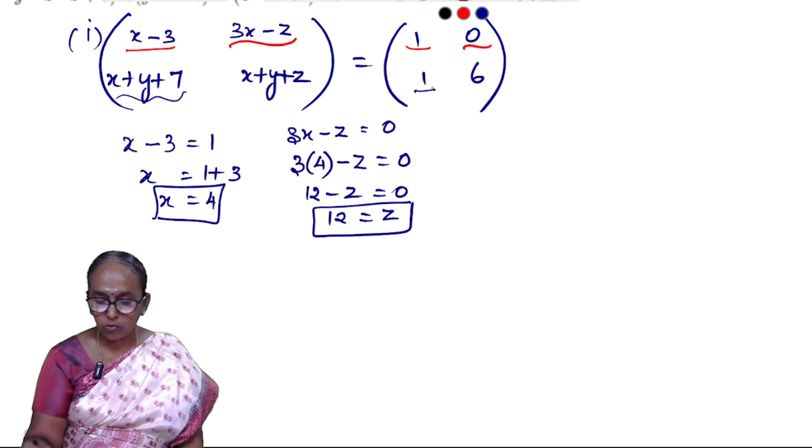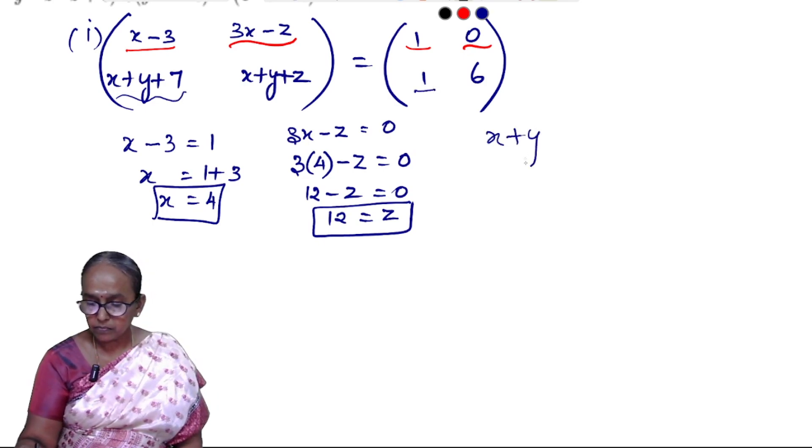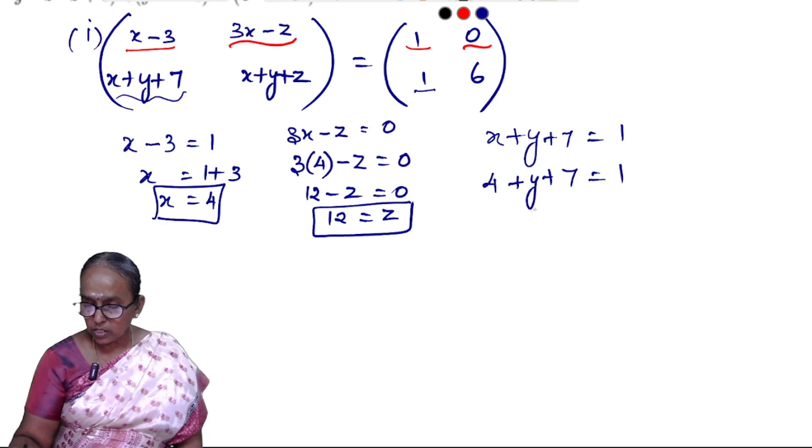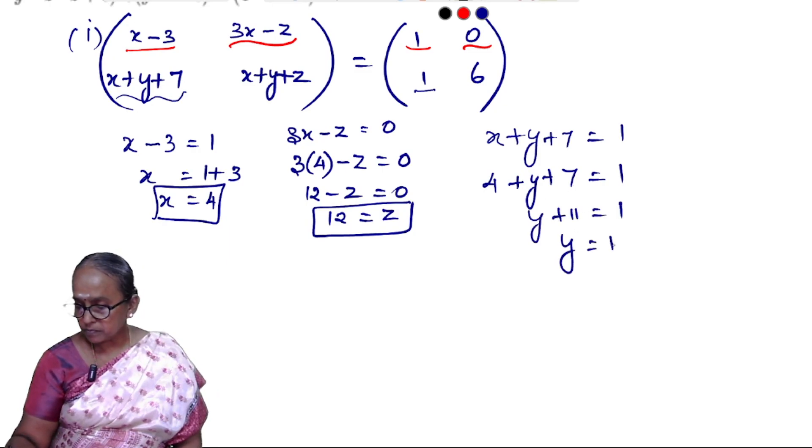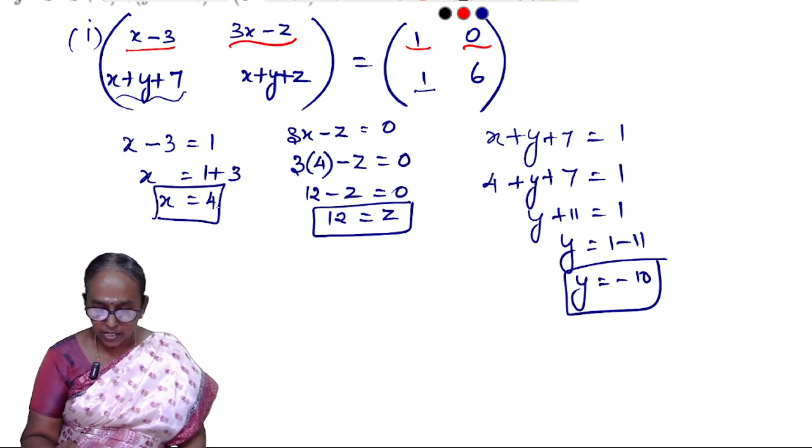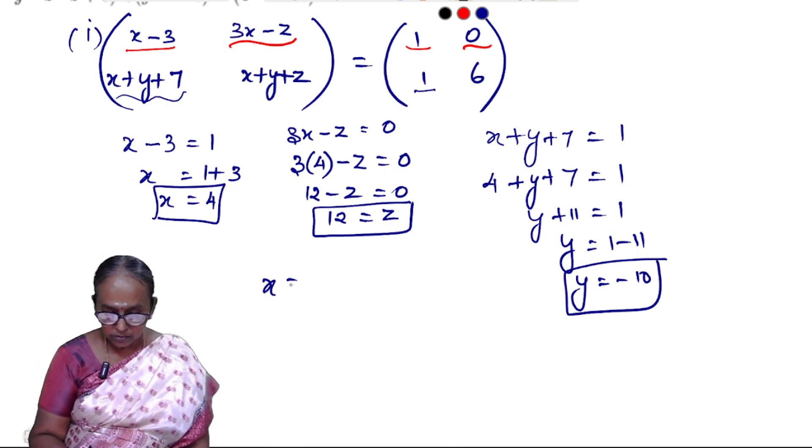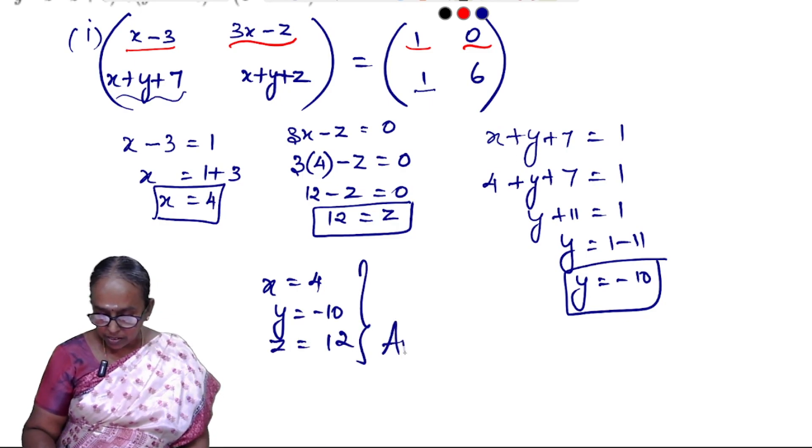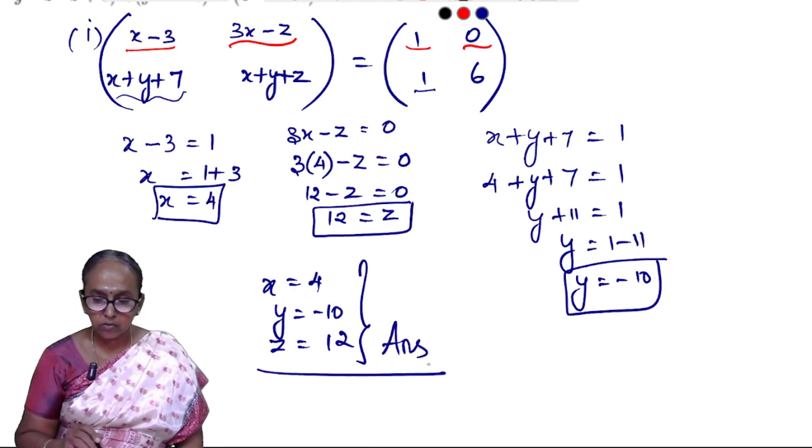X plus Y plus 7 is equal to 1. X is equal to value 4, so 11 minus 10. X is equal to Y minus 10, Z is equal to 12. X is equal to Z, so Z is equal to value 4. This is the answer.